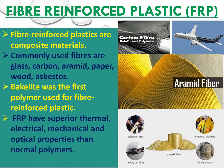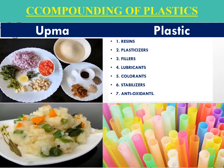Carbon fiber reinforced polymers are used in the manufacturing of different parts of aeroplanes and rockets. We also have different types of bulletproof jackets, body armors, racing car pipes, tires, sailboat ropes, and more — different fibers can be used for these purposes.